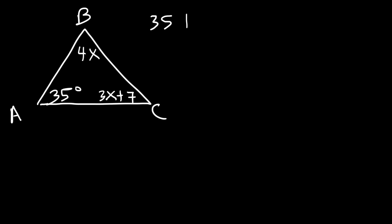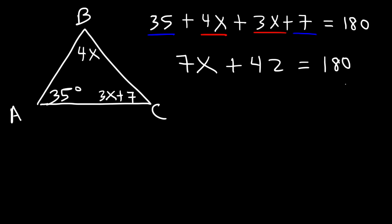So angle A, which is 35, plus angle B, which is 4x, plus angle C, which is 3x plus 7, all of that has to add up to 180. So let's combine like terms. 4x and 3x, they add to 7x. 35 plus 7 is 42. So 7x plus 42 adds up to 180. Now let's subtract both sides by 42.